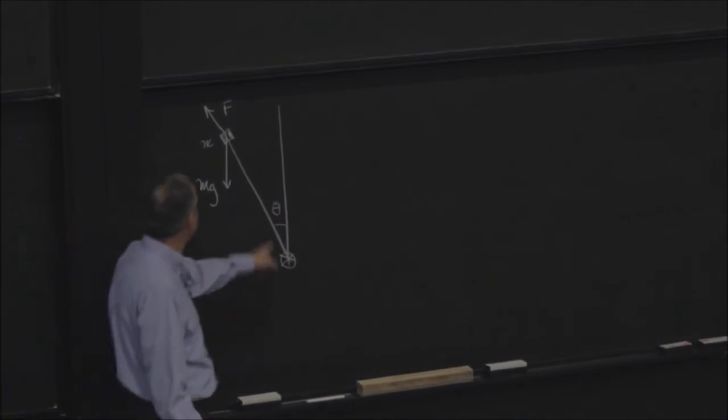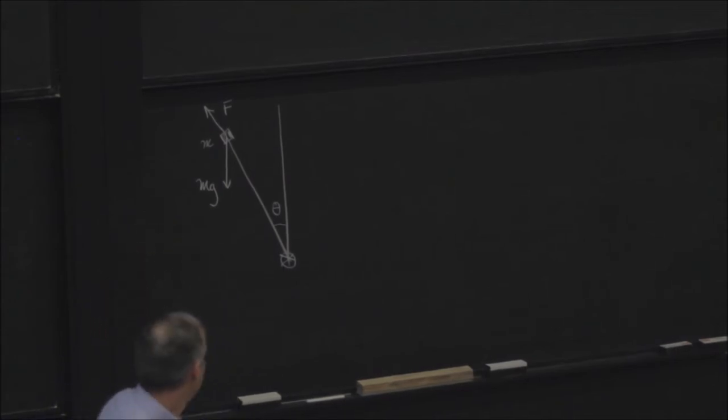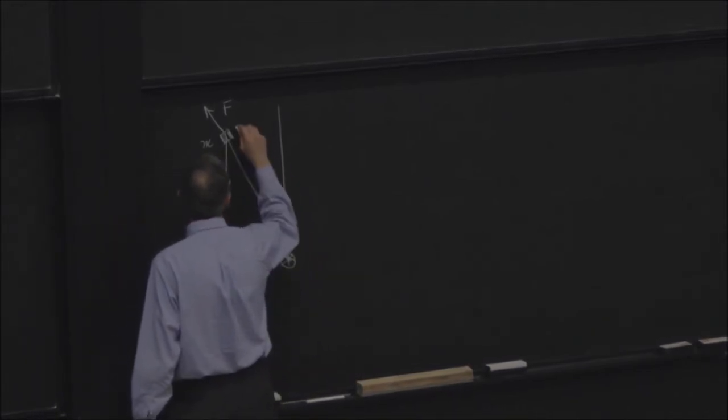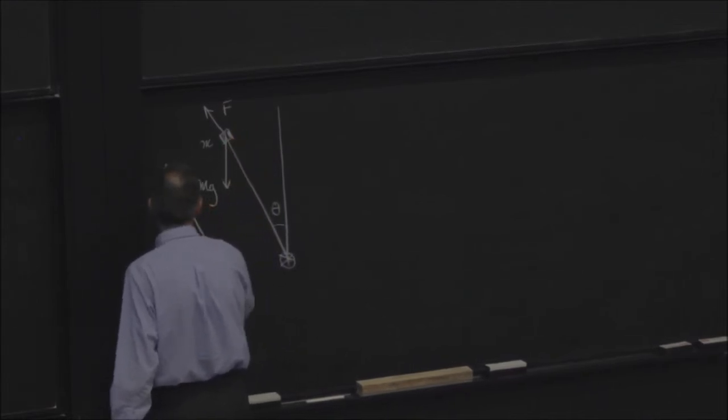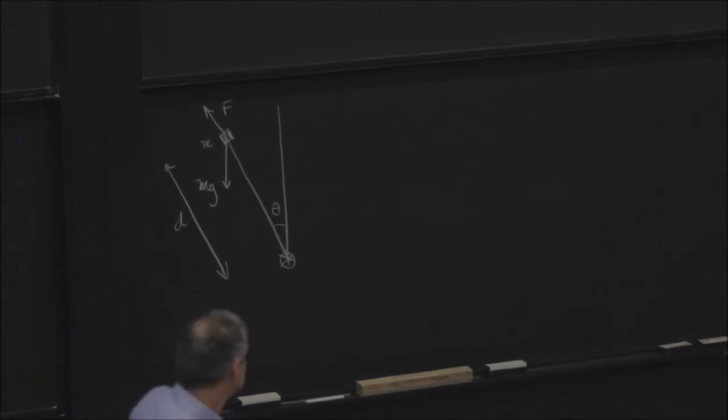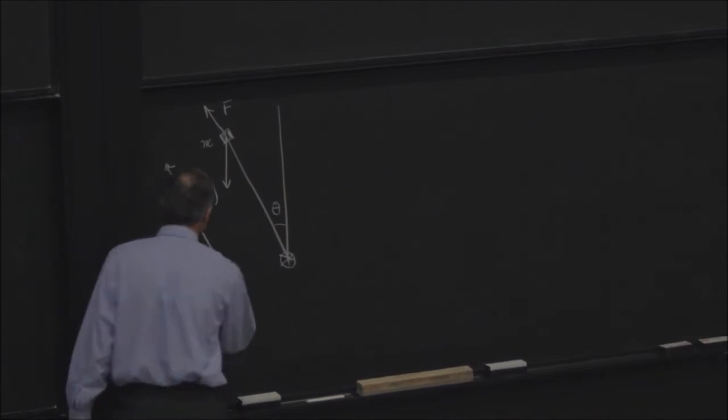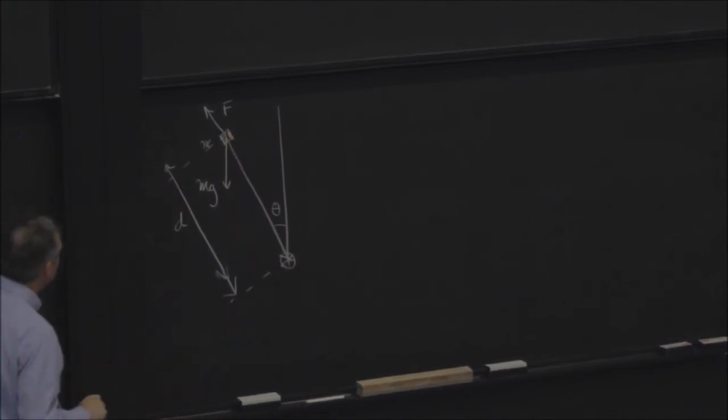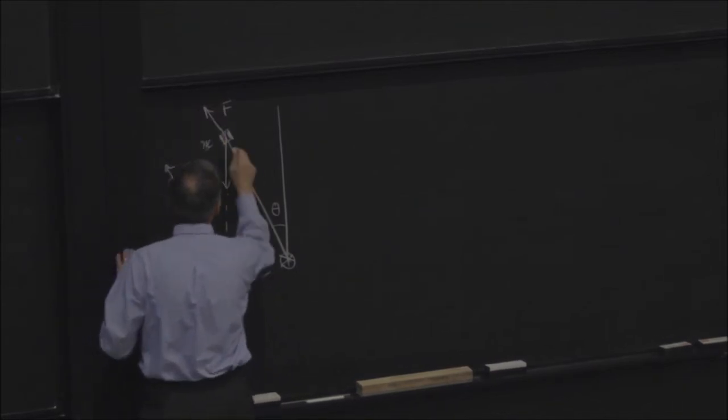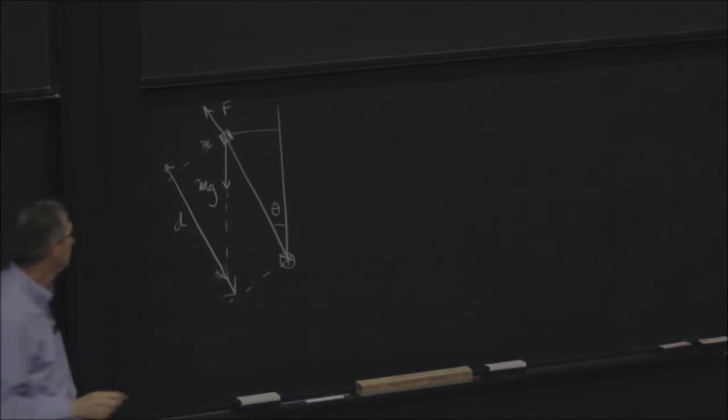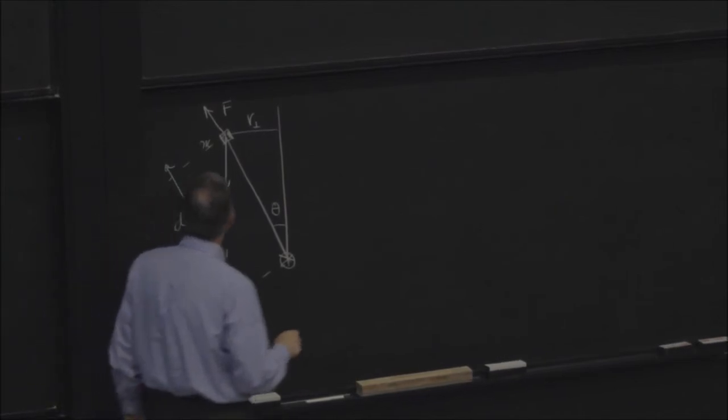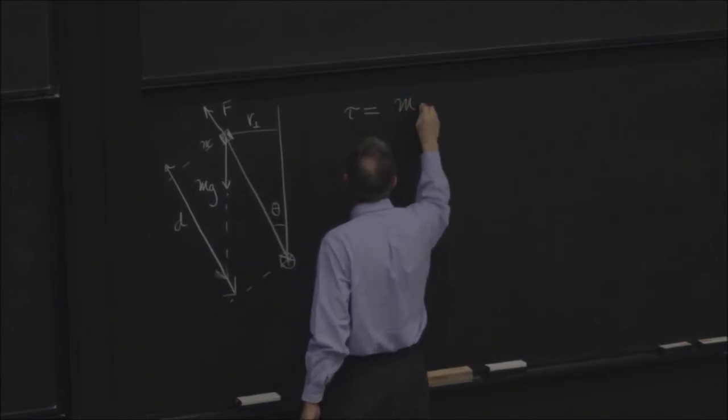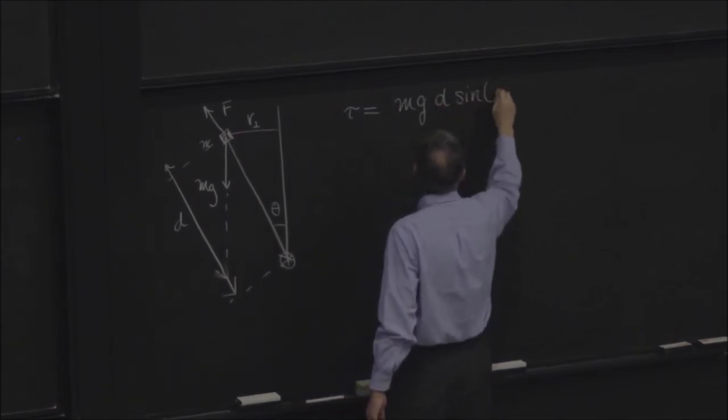So the support force from the rod doesn't produce a torque. But gravity will produce a torque. It's d, right? d is this distance. So what's the torque from gravity about the reference point? This should go a little farther. Something like that. So line of action of the force is there. So I want that distance, right? That's the perpendicular distance, r perpendicular.